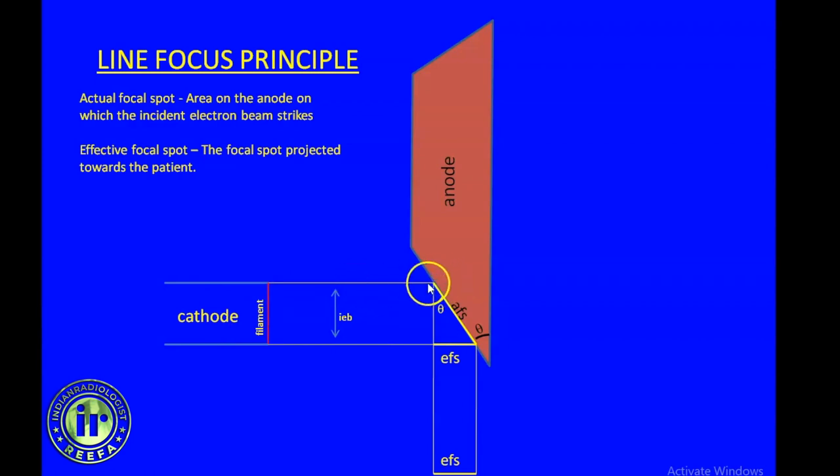As this electron beam strikes the anode, we can achieve a narrow electron beam by having a shorter filament. But more heat will be concentrated on a smaller area of the anode. X-ray production releases tremendous heat energy. In fact, 99% of the energy is lost as heat, and only 1% is fruitful in the production of x-ray. This high energy beam converging on a smaller surface area results in poor heat dissipation and reduced life of the x-ray tube.